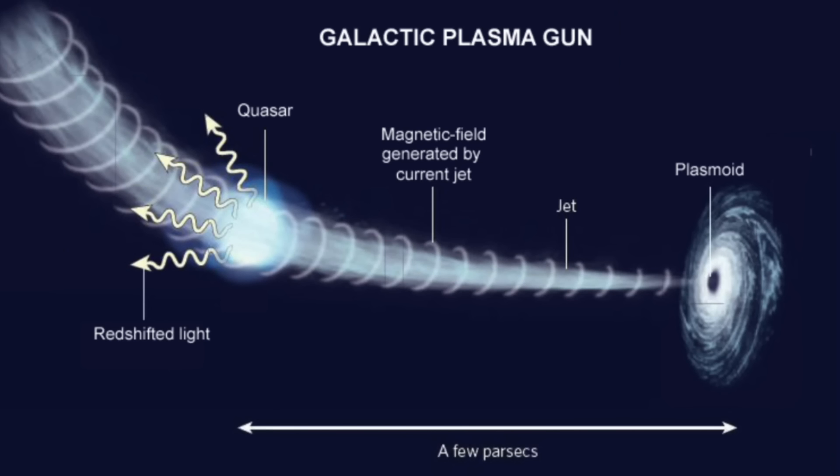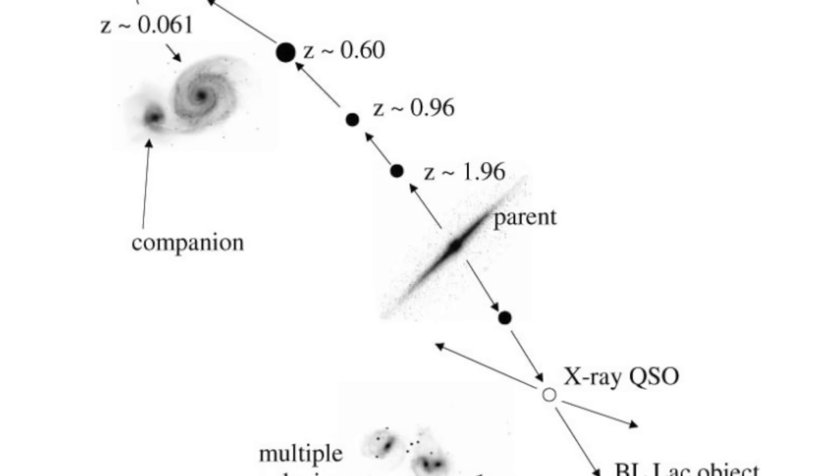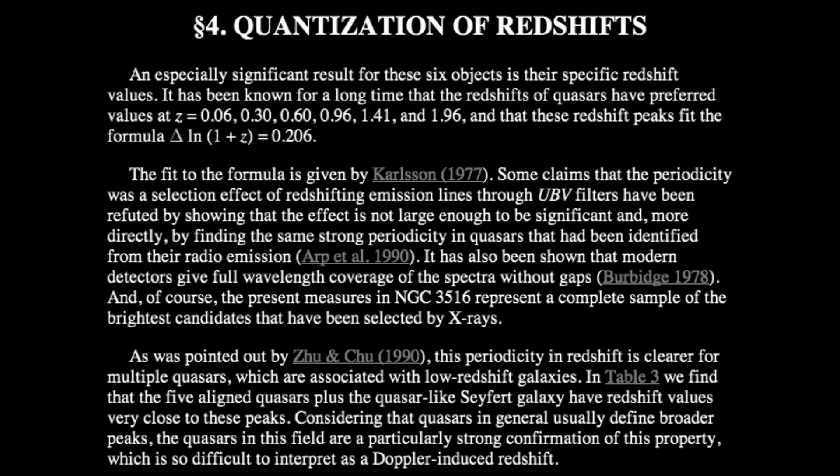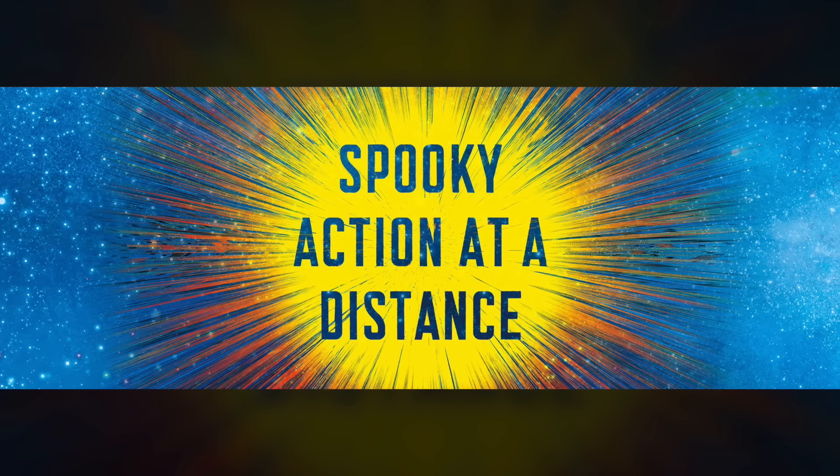Now this electrical relationship between mass and matter allows us to understand how quasars can be newborn objects with low mass and brightness and high intrinsic redshifts. With time, their mass increases and their intrinsic redshift decreases in quantum jumps. Proof that quantum effects can happen at galactic scales, though only possible at the near instantaneous speed of the electric force. Spooky action at a distance, anyone?